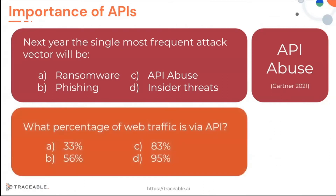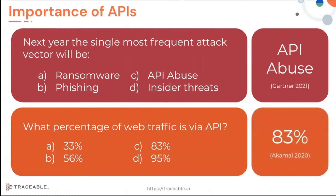One more question for our pop quiz: what percentage of web traffic is via APIs? Is it 36%, 56%, 83%, or 95%? 83% of all traffic goes via APIs. We can see that single-page applications, mobile applications, and all the new-age things are rapidly taking over from monolithic and multi-page HTTP applications.